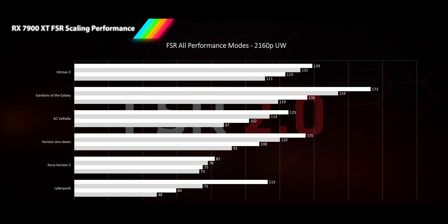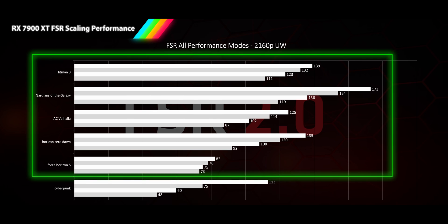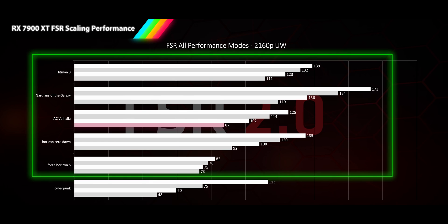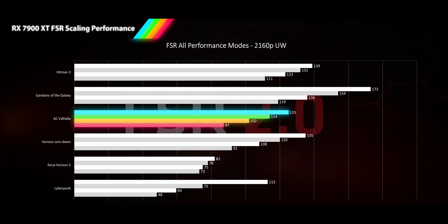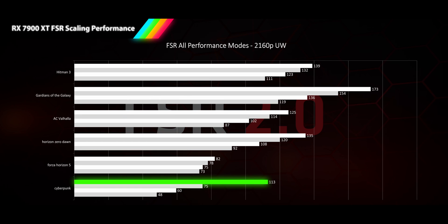I also tested 4K ultrawide at all performance levels offered by FSR. Pretty much all games show very consistent fps scaling with each additional level of FSR — so if you got 10fps from turning on quality mode, you'll get another 10 for stepping down to balanced, and so on. The only exception is Cyberpunk 2077, which appears to have a specially tweaked ultra performance mode that I'd reclassify as a 'dear god, please just let this game run on my PC' mode.